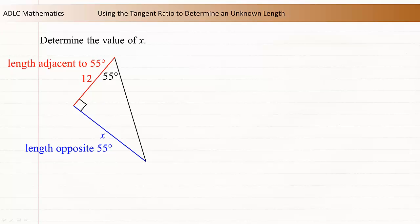Now we can use the tangent ratio. The tangent of 55 degrees is equal to the length opposite 55 degrees divided by the length adjacent to 55 degrees. The length opposite 55 degrees is x and the length adjacent to 55 degrees is 12.